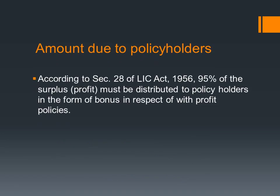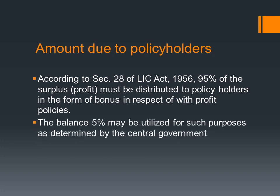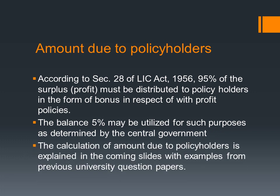According to Section 28 of the LIC Act 1956, 95% of the surplus must be distributed to policy holders in the form of bonus in respect of with-profit policies. The balance 5% may be utilized for such purposes as determined by the central government. The calculation of amount due to policy holders is explained in the coming slides with examples from previous university question papers.